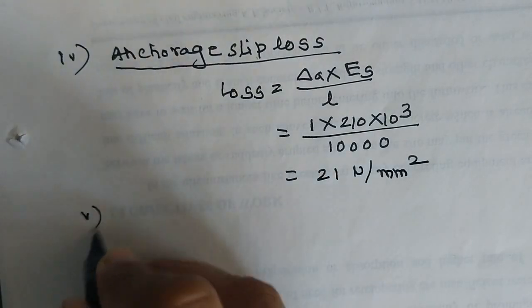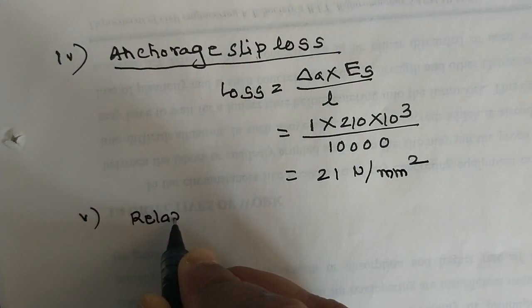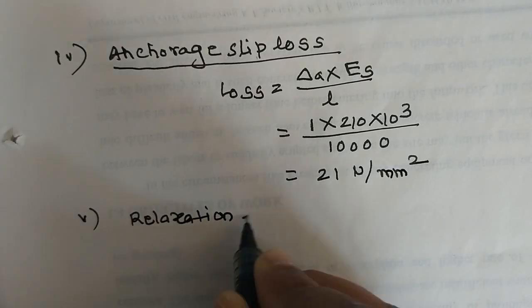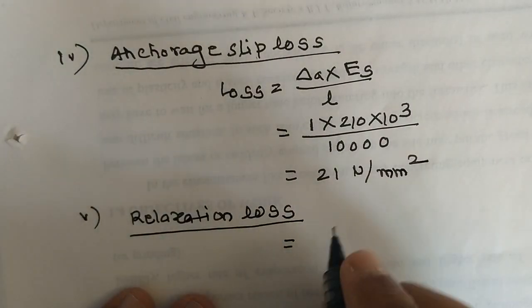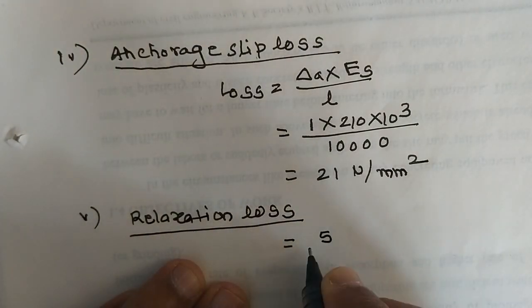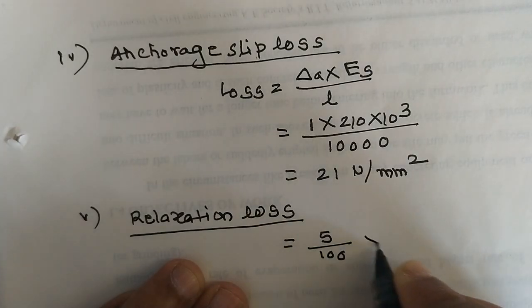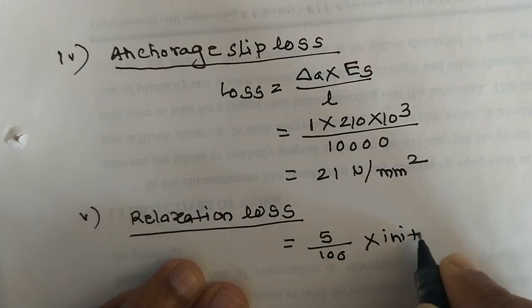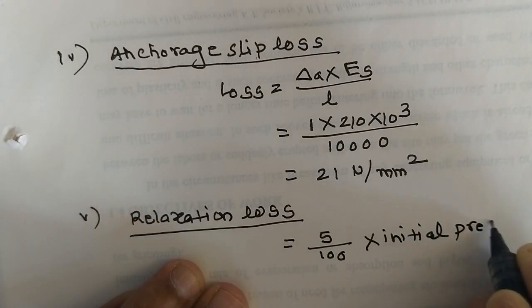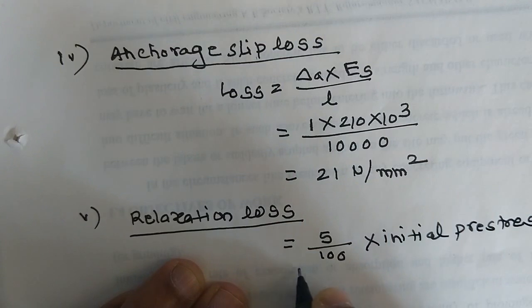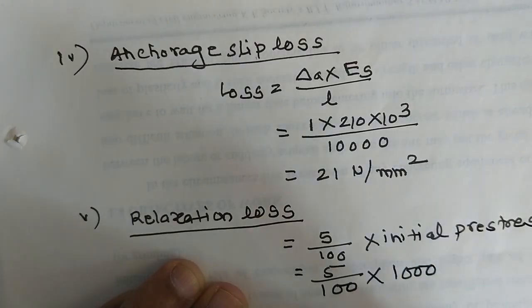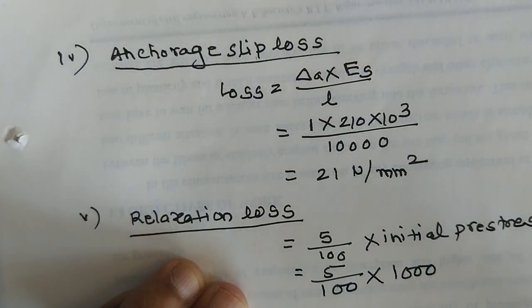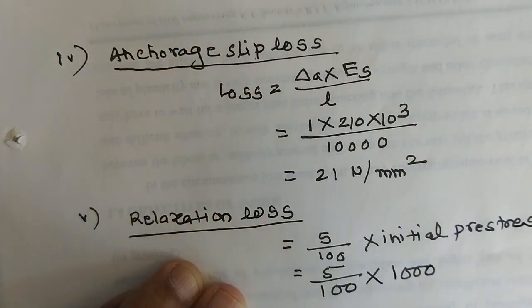The fifth and last loss is relaxation loss, which is 5% of initial pre-stress. So relaxation loss = 5/100 × 1000 = 50 MPa.